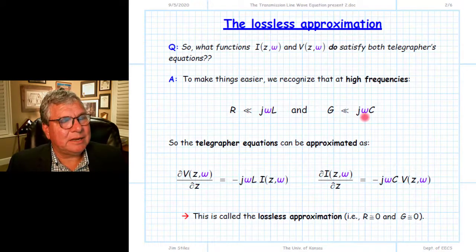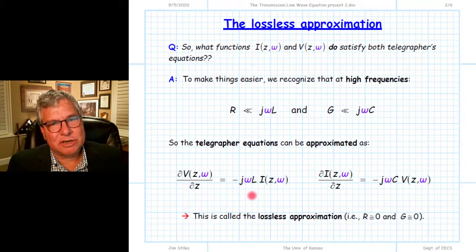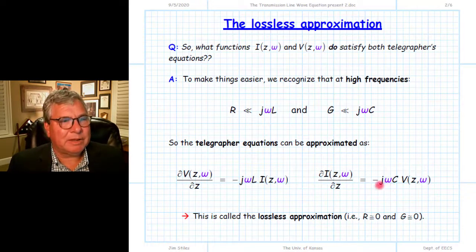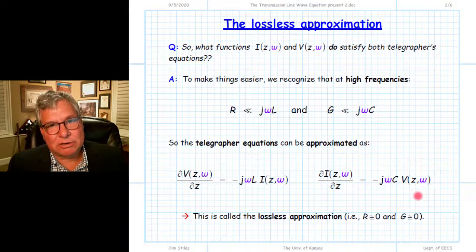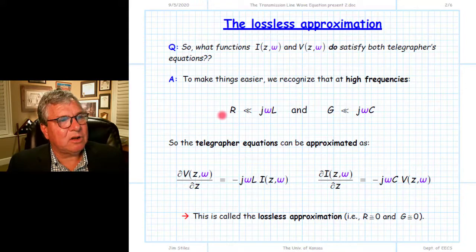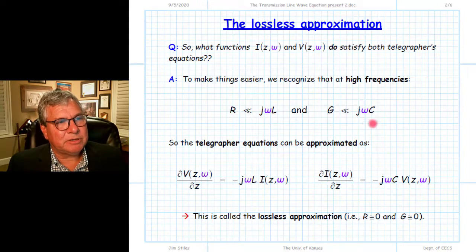For the series impedance R + jωL, we can replace it with simply jωL. There was a minus sign out front, so that's why we get minus jωL here. Likewise, for the admittance per unit length G + jωC, we can replace that with simply jωC. This is called the lossless approximation, where we say the resistance per unit length equals zero and the conductance per unit length equals zero. We're really just saying R is much less than the magnitude of jωL — in other words, ωL — and G is much less than ωC.